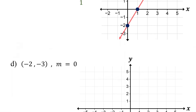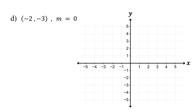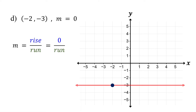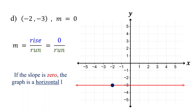Now, what if the slope is zero? How do you graph the line? Start by plotting the point. When the slope is zero, the line is horizontal. This means there is no rise — the line doesn't go up or down. So, just draw a horizontal line that passes through the point. In general, if the slope is zero, the graph is a horizontal line passing through the given point.